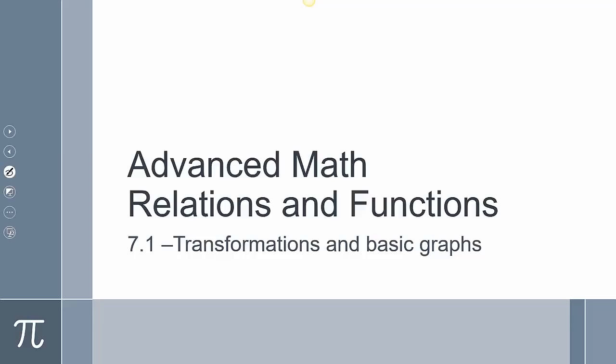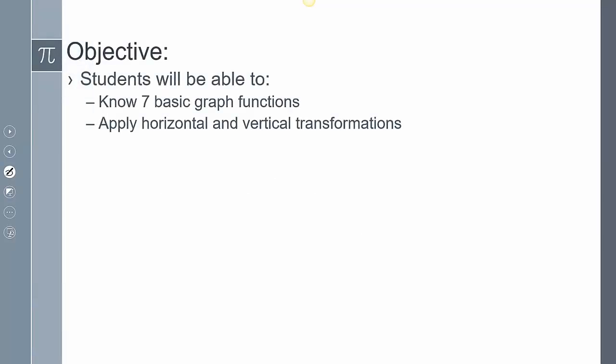Today is going to be chapter 7-1, and we're going to look at transformation and basic graphs. We're going to know the seven basic graph functions and apply horizontal and vertical transformations.